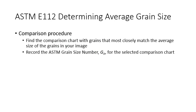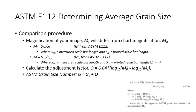To summarize the comparison procedure: we'll begin by pulling up our image and finding the comparison chart with the grains that most closely match the average grain size of the grains in our image. Then we will record that number G-naught for the selected comparison chart. Next, we have to calculate the adjustment factor Q, which will depend on the magnification of our image M, and the magnification of the chart M sub B.